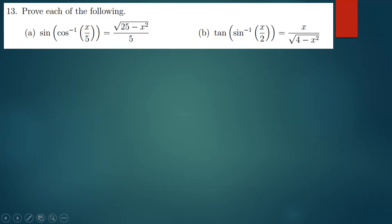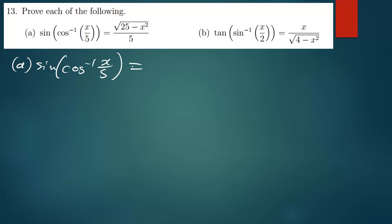So what we've been given is cos inverse of that. The first question, which is A, they're asking us to say we have sine of cos inverse, so we have sine of cos inverse of x over 5. They're saying we prove that this is equal to √(25 minus x squared), everything over 5.